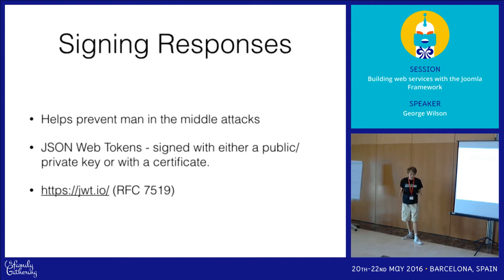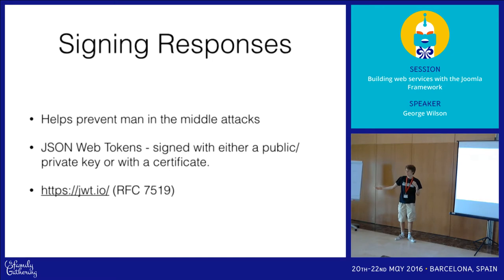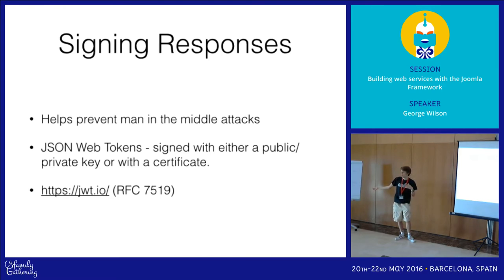Those are the two fundamental principles of API security: making sure people you don't want can't access your data, and ensuring that during a secure transaction no one tampers with it. You can even make it work the other way — where I work in the authentication business, we use JSON Web Tokens so the client knows our response hasn't been tampered with, confirming that yes, this user was authenticated.